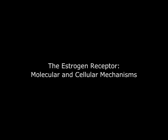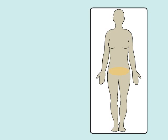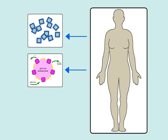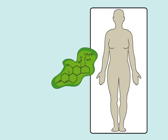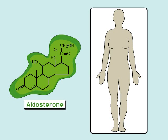The estrogen receptor: molecular and cellular mechanisms. Steroid hormones are chemical substances secreted by glands throughout the abdomen and involved in the regulation of a variety of functions, including sodium balance, metabolism, and reproductive functioning.